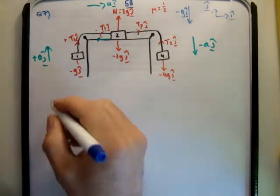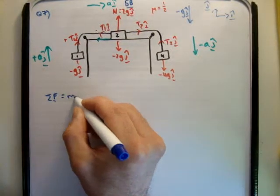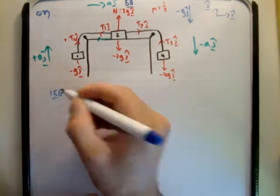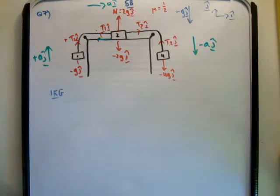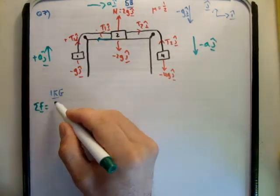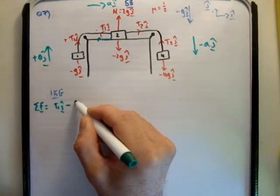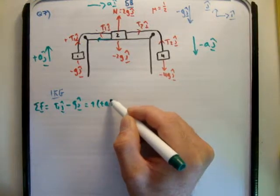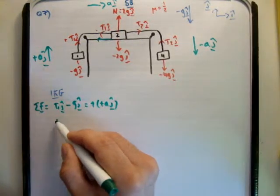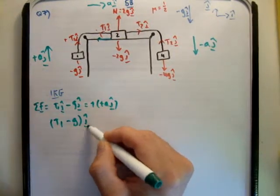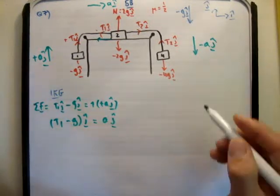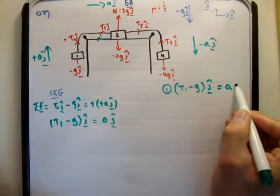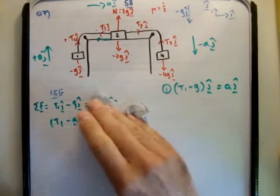The next thing we need to do is apply Newton's second law: the sum of the forces is equal to the mass of the object times its acceleration. Starting with the 1 kilo mass, the sum of the forces is equal to T1 j-hat minus g j-hat, which equals 1 times positive a j-hat. So T1 minus g in the j-hat direction equals a. I'm going to call this equation 1.